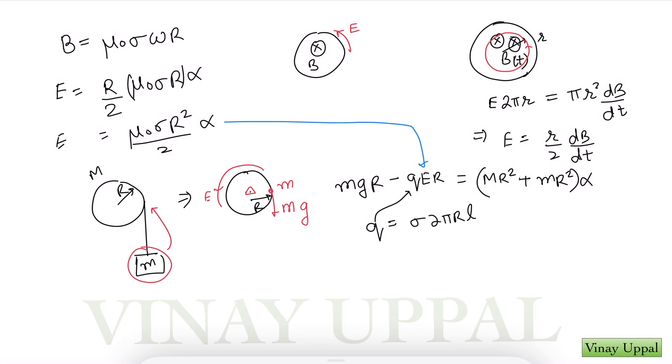Substitute that here and you will get your angular acceleration. It's a very straightforward equation and the acceleration of the block would simply be alpha r. So I'll write that down. You should get that mg divided by m plus M plus π μ₀ sigma squared r squared l. So this will be the acceleration of the block.